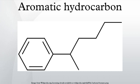Arene reactions: arenes are reactants in many organic reactions. In aromatic substitution, one substituent on the arene ring, usually hydrogen, is replaced by another substituent. The two main types are electrophilic aromatic substitution, when the active reagent is an electrophile, and nucleophilic aromatic substitution, when the reagent is a nucleophile. In radical nucleophilic aromatic substitution, the active reagent is a radical. An example of electrophilic aromatic substitution is the nitration of salicylic acid.